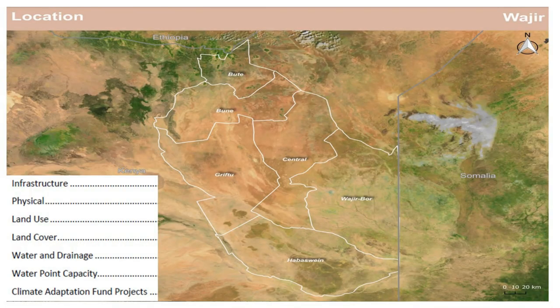This is a template map of Isiolo County where the community was facilitated to identify which features are where and what their attributes are. Some of those features included infrastructure, physical features, land use, land cover, water and drainage, water point capacity, and other adaptation projects in the community, all mapped into the county map. A similar one was done for Wajia.